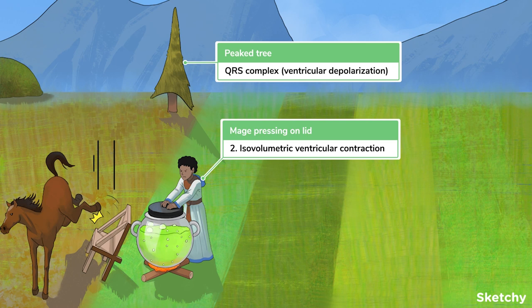This represents the electrical activation or depolarization of the ventricles and translates directly to ventricular contraction and an increase in ventricular pressure, but with no change in volume. This mage is holding down the top of this bubbling cauldron to help you remember this. Like isovolumetric ventricular contraction, this will increase the pressure inside, but keep the volume of potion unchanged.